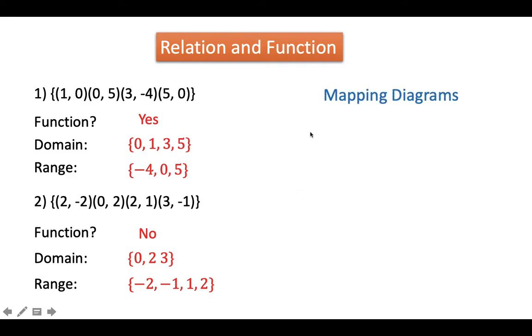In mapping diagrams, we can see in a different perspective how we identify if a given set of points is a function or not. Same given number 1, since the domain are 0, 1, 3, 5, and the range are negative 4, 0, and 5. If our x is 0, our y is 5; if x is 1, y is 0; if x is 3, y is negative 4; if x is 5, y is 0. Notice that they have unique values for every x. There are unique values of y.